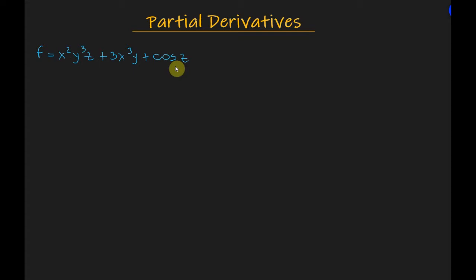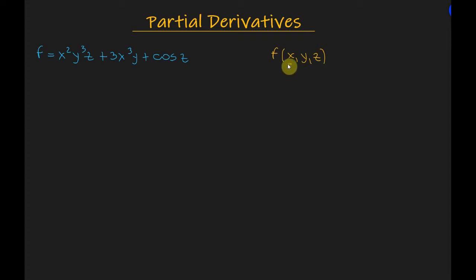When we are given a function of two or more variables — like in this example x, y, and z — the partial derivative of the function f with respect to x gives the rate of change of the function with respect to x.